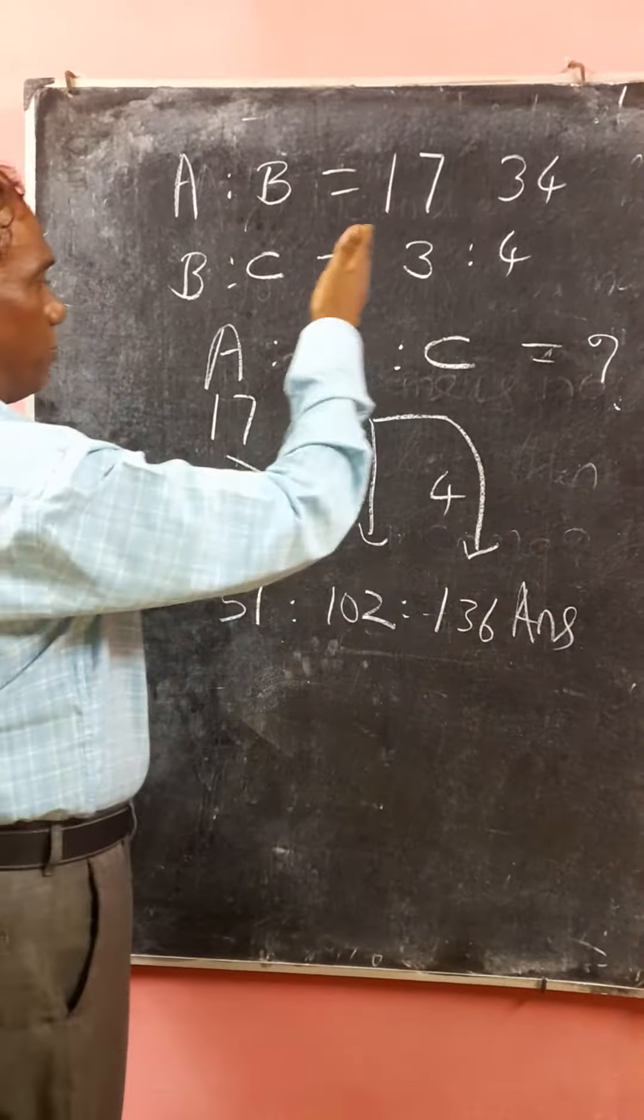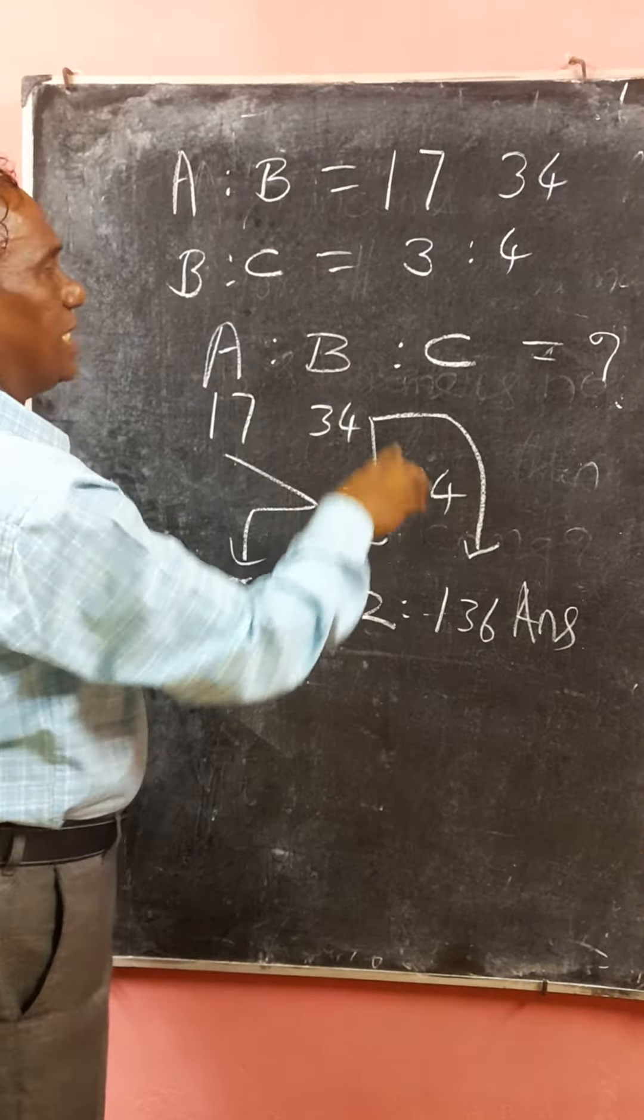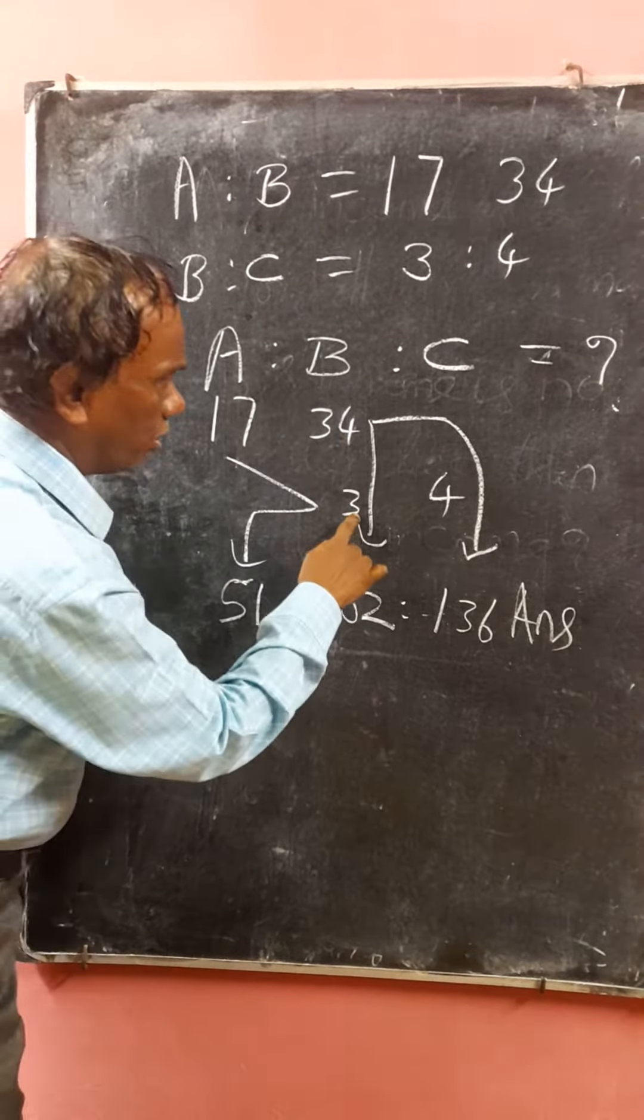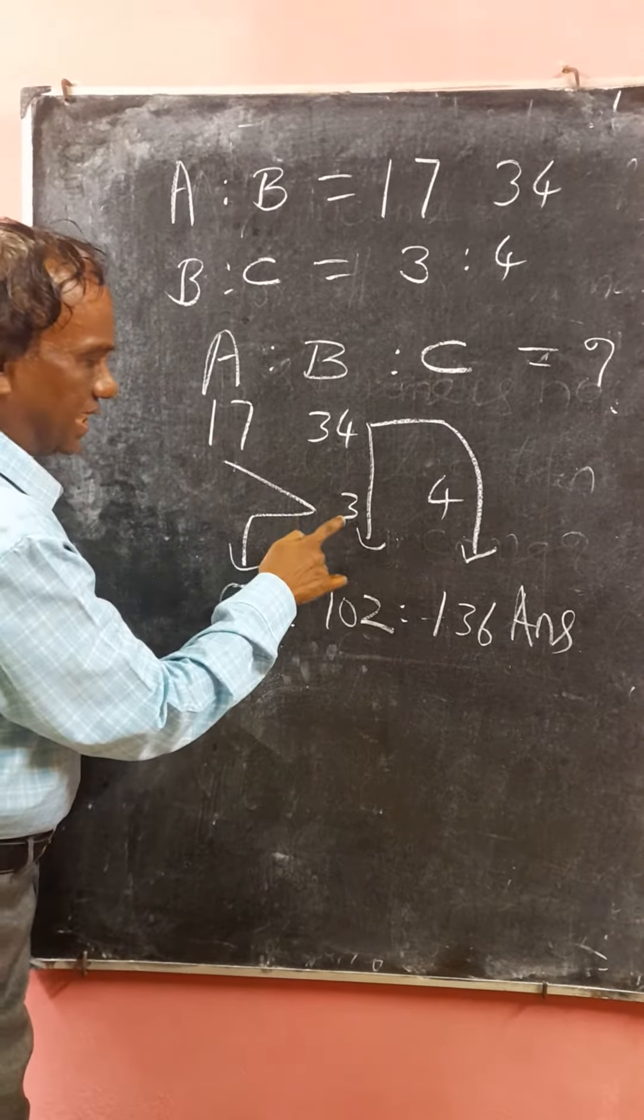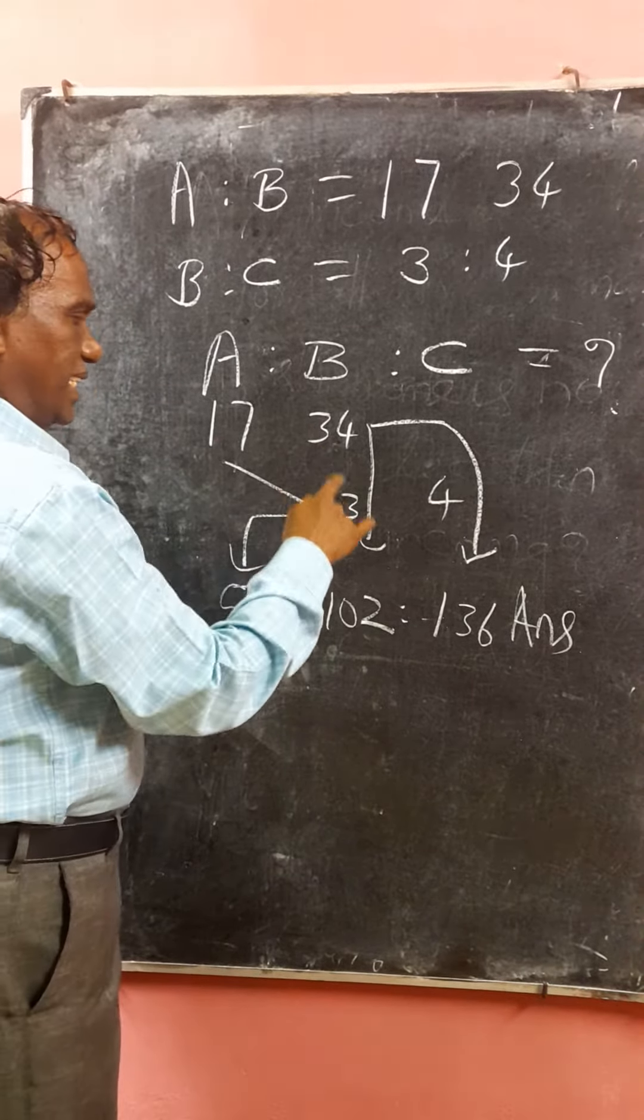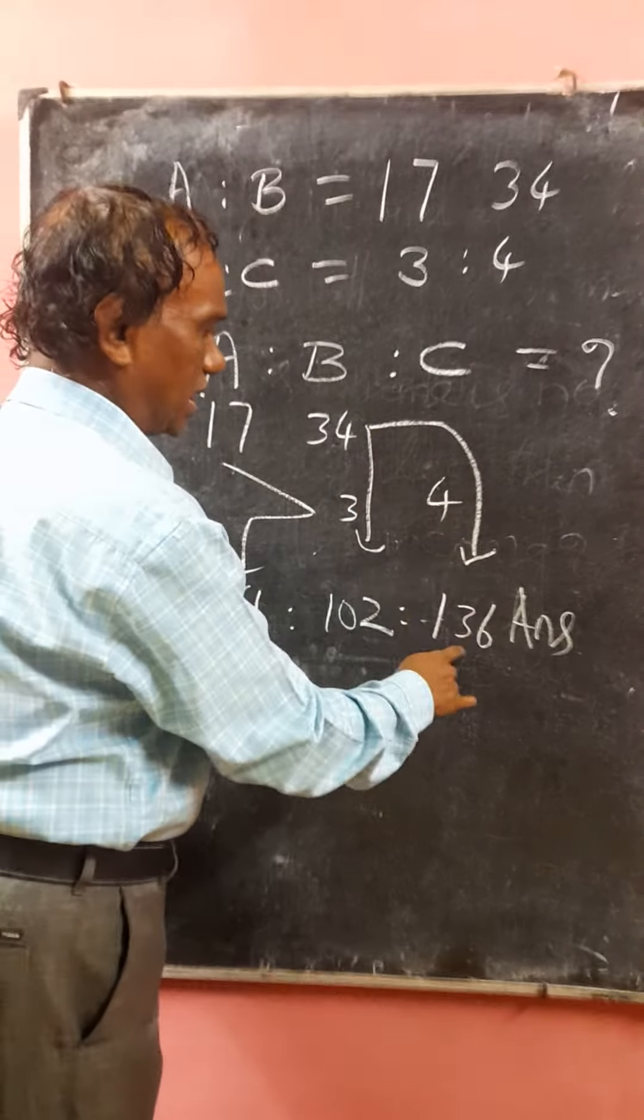Friends, simply write 17, B is to 34. And the second B you write just below this, C you write below this. Answer it. Multiply this and this: 51. Multiply this and this: 102. Multiply this and this: 136.